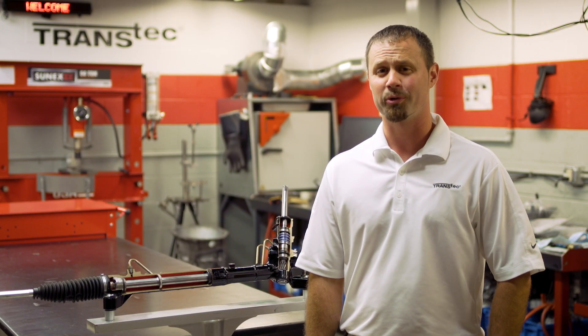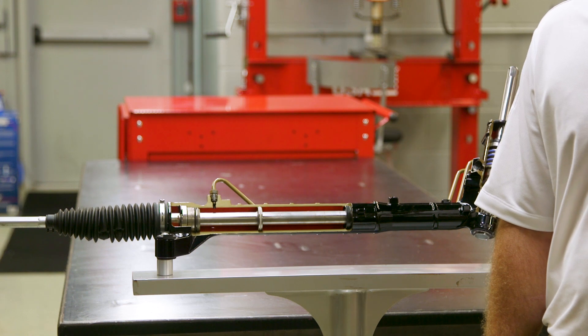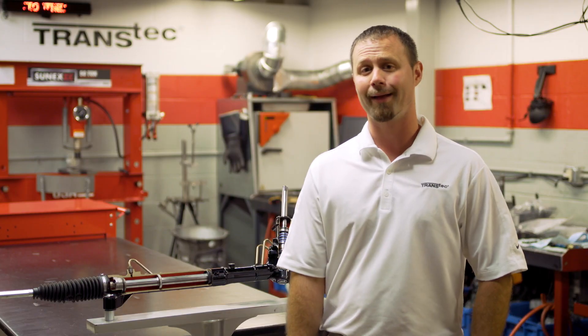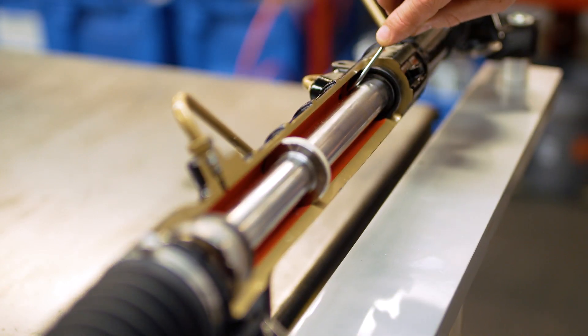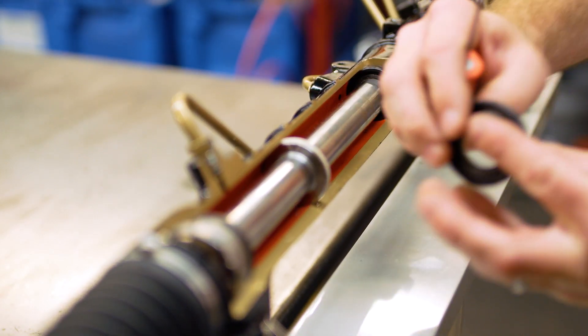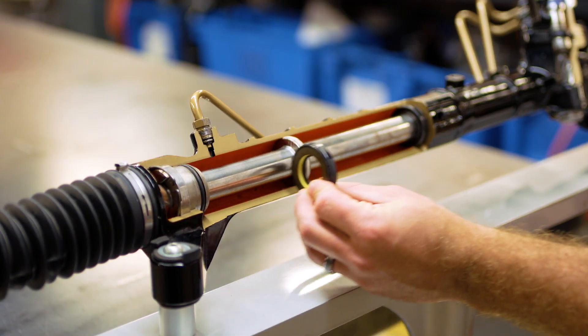Today we're going to demonstrate a crucial yet often overlooked step in rebuilding your power steering hydraulic rack. These are transfer line ports. Now these ports are sharp and may have burrs that will ruin your seal when you go to press it through the rack housing down into position.